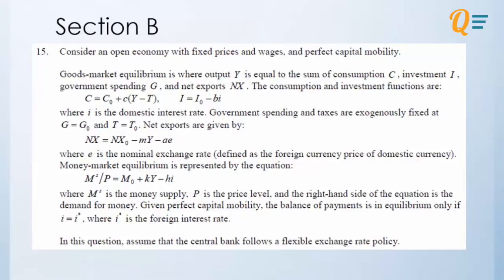As usual, government spending and taxes are exogenously fixed. So we have an open economy, and then we have our net exports where we have our exchange rate as well, and we have our money market equilibrium. So now, these are the parts which have to be in mind when we answer the questions.